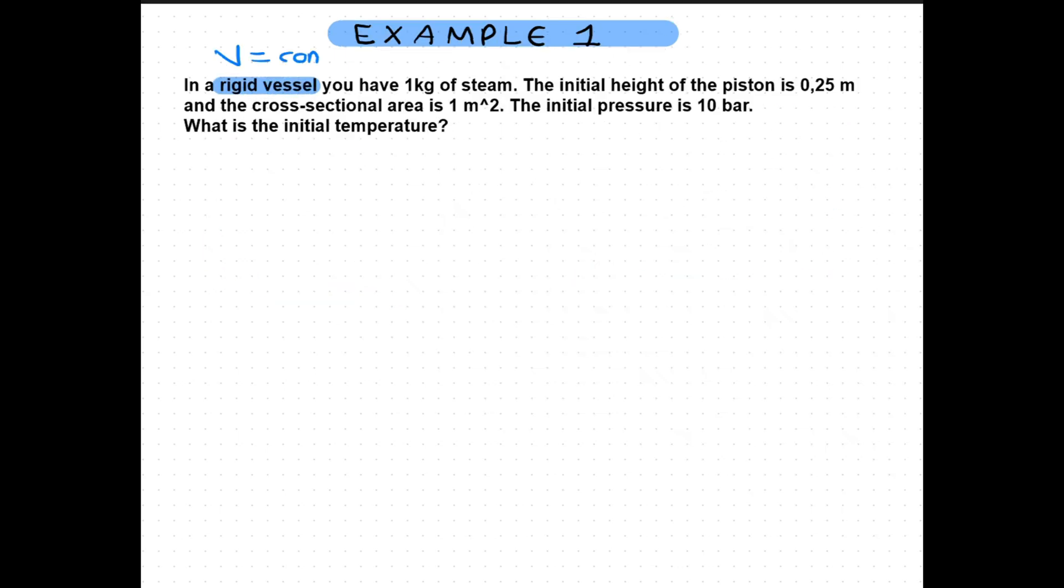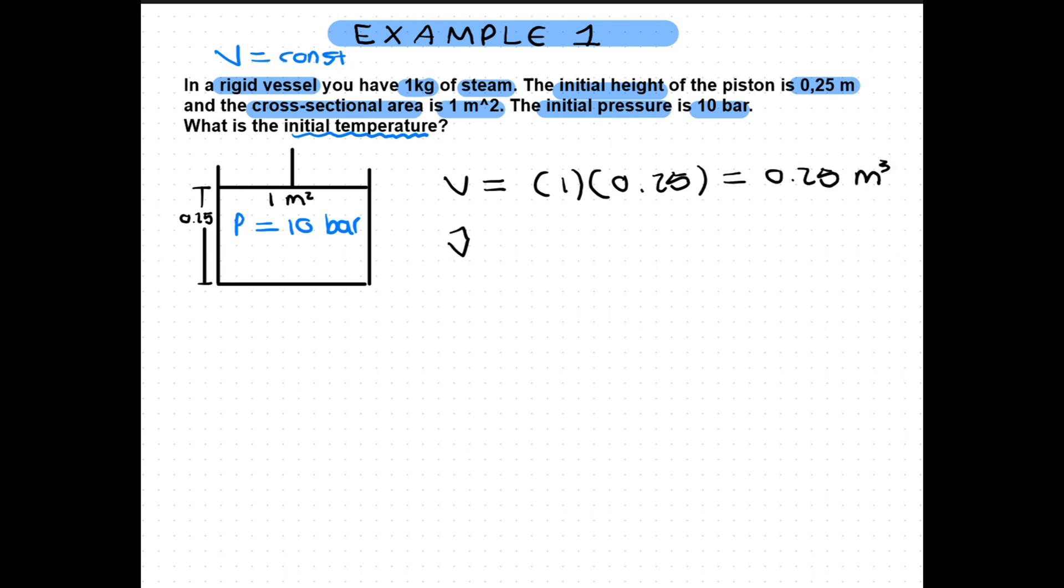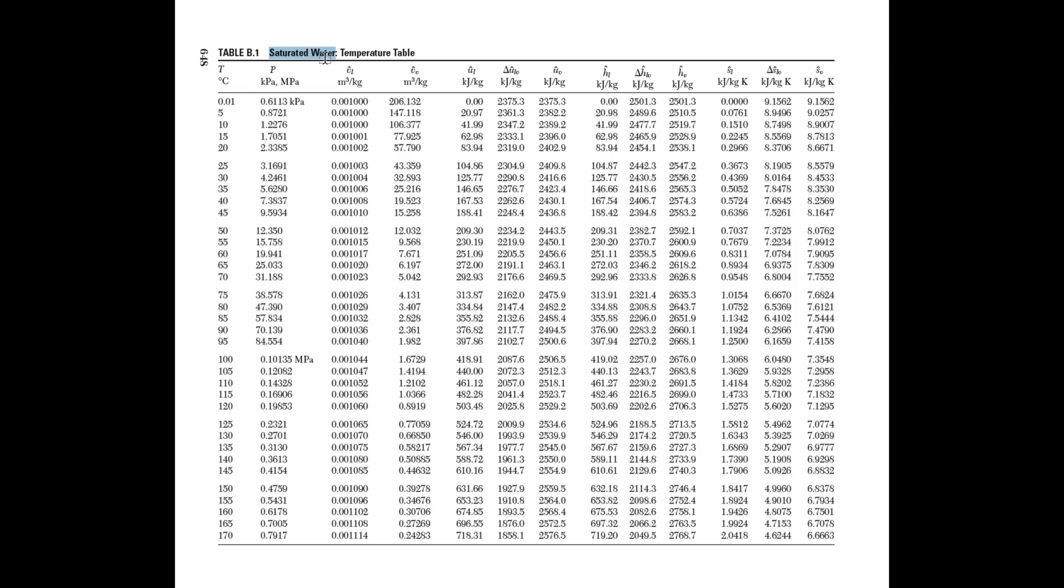In a rigid vessel you have one kilogram of steam. The initial height of the piston is 0.25 meters and the cross sectional area is one meter squared. The initial pressure is 10 bar. What is the initial temperature? Since the dimensions of your piston is given you can calculate the volume. With the mass you can then calculate the specific volume. Then you need to go to your steam tables.